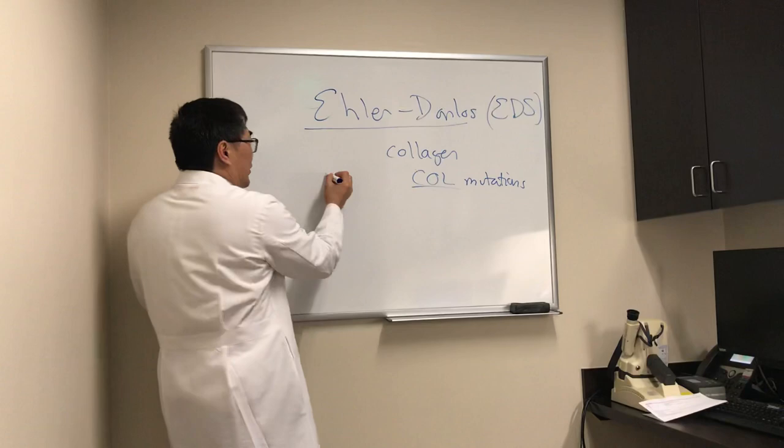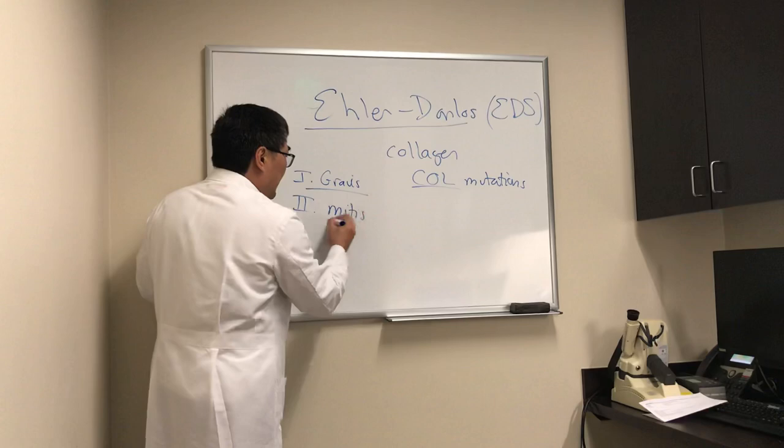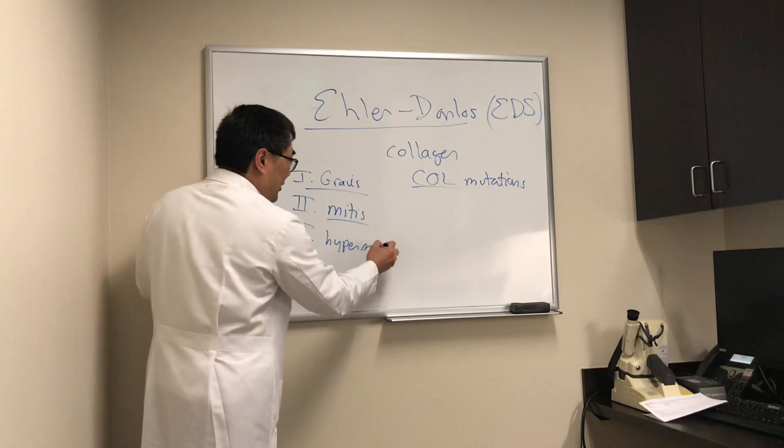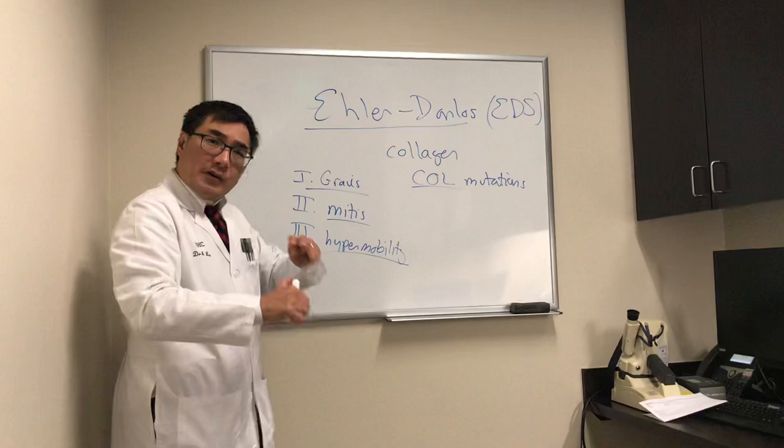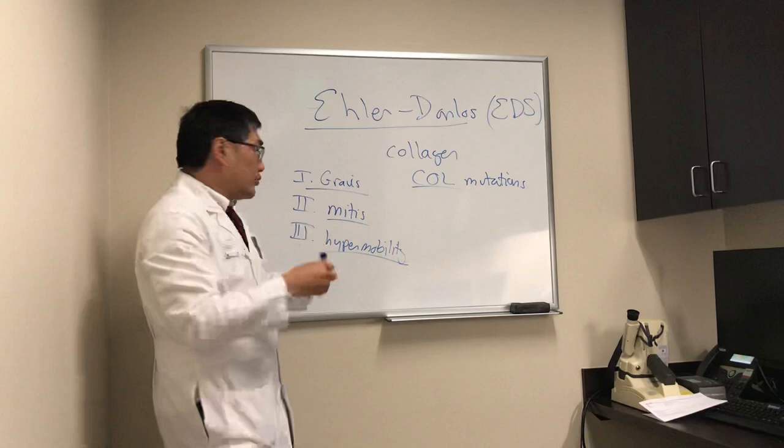The first type is Gravis, which is the classic form, and then there's a mini-me version called the Mitis form. Type 3 is the most obvious, which is the hypermobility form. In the hypermobility form, patients have hypermobility of their joints — there are various scoring regimens where patients can bend their fingers, touch around their thumbs, and bend their joints in various ways. They're basically human versions of Elastigirl.